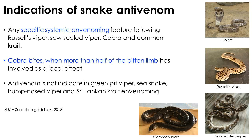The polyvalent antivenom is administered in the presence of any specific systemic envenomation features following Russell's viper, saw-scale viper, cobra, and common krait bites. Apart from the presence of systemic envenomation features, antivenom is also indicated when more than half of the bitten limb is involved in cobra envenomation. This is the only instance where antivenom is indicated following local effects of snake envenomation in Sri Lanka.